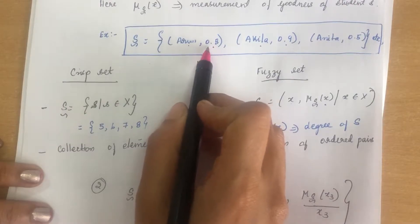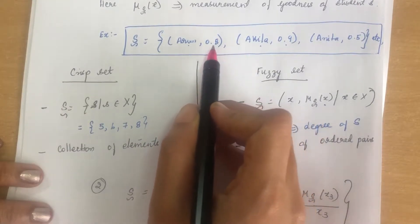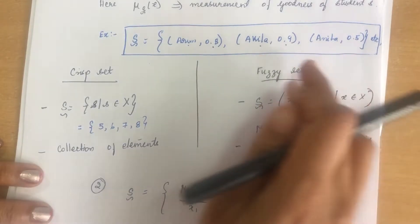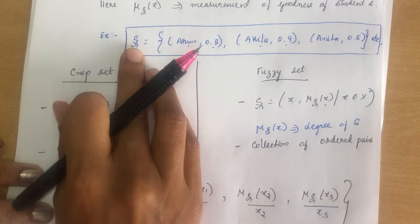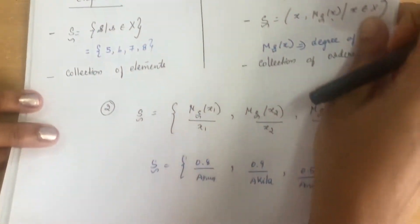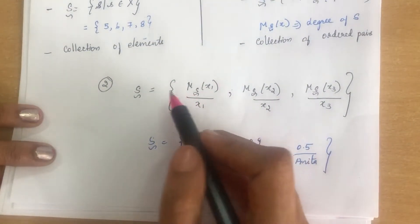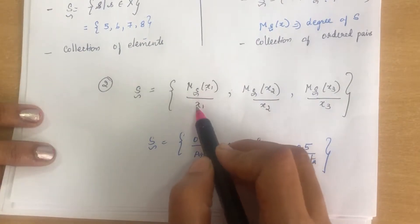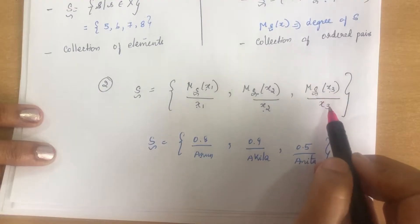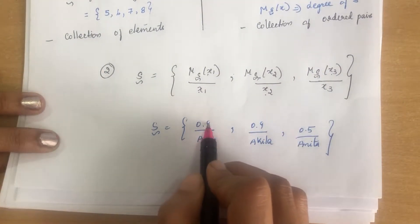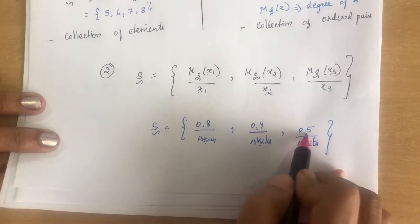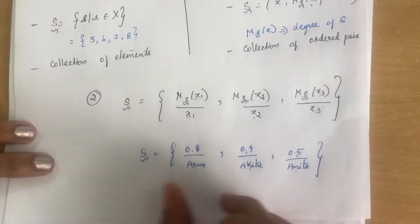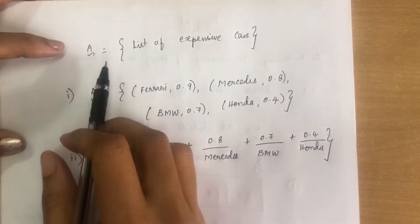The membership value always lies between 0 and 1. Arun has 0.8, Akkila has 0.9, Anita has 0.5. Another way to write this is the numerator-denominator (fraction) manner: membership value over element — μ(x₁)/x₁ + μ(x₂)/x₂ + μ(x₃)/x₃. So you can write 0.8/Arun + 0.9/Akkila + 0.5/Anita. Either method can be used to represent fuzziness.